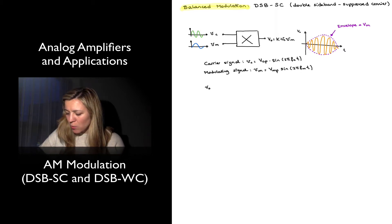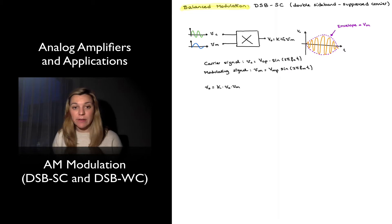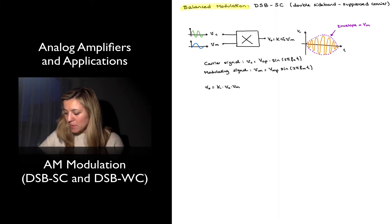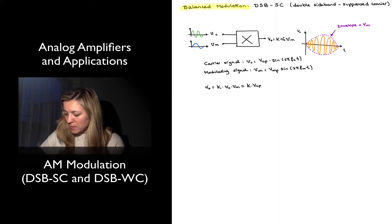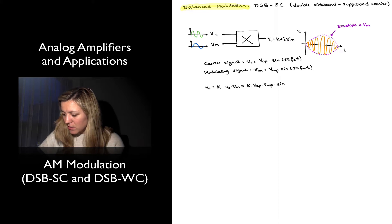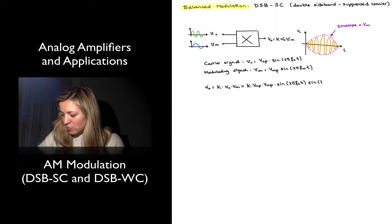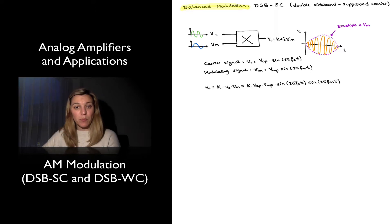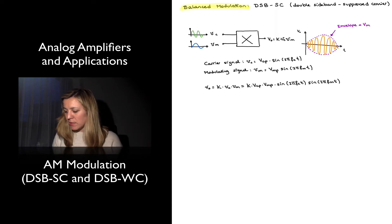My output voltage is equal to — or proportional to — the product of the two, with proportionality constant K. So Vout = K · Vc · Vm = K · Vcp · Vmp · sin(2π·Fc·t) · sin(2π·Fm·t). I'm basically just multiplying the two signals written above.